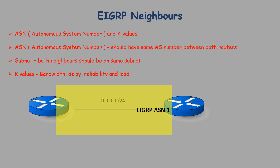Consider the following example: we have a simple network of two routers both running EIGRP with an ASN of 1. Because the interfaces on both routers are in the same subnet and the K-Values match, the routers will become neighbors. Information about EIGRP neighbors is stored in the neighbor table, which can be displayed using the command 'show ip eigrp neighbors'.